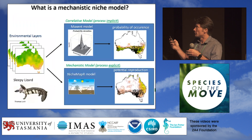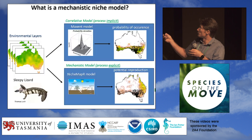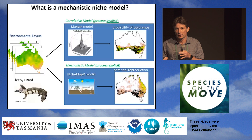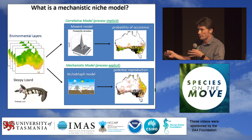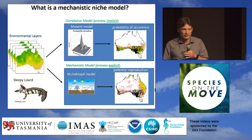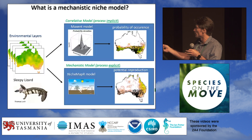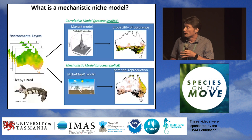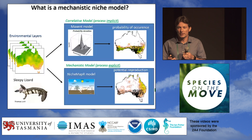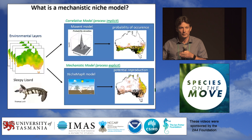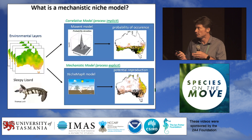Comparing correlative and mechanistic models: with correlative models we produce a map of probability of distribution, whereas with a mechanistic model we plot a variety of possible outputs representing constraints. In the simplest case with NicheMapper, you could plot potential activity time or risk of overheating. Or you can go all the way through and predict something like reproduction potential using the Dynamic Energy Budget model, as I've done here with the sleepy lizard. These two modelling approaches are complementary and best used in tandem — the intriguing differences between their maps will give much more insight into climatic limitations than using one approach alone.